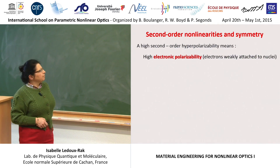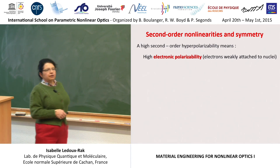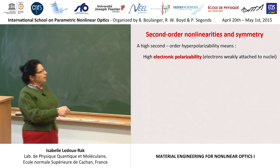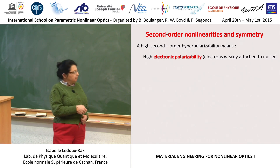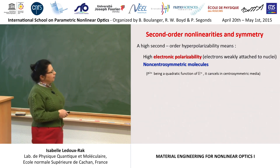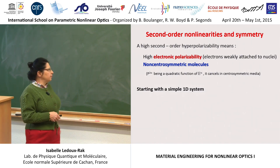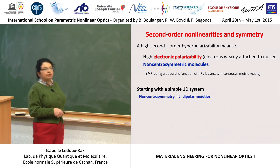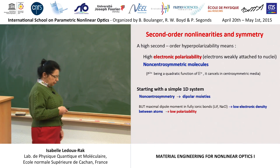The next point is related to symmetry. A high second-order hyperpolarizability will require, first, a large number of electrons, and those electrons must be sensitive to the action of an electric field — they should display a high electronic polarizability, meaning they are not too tightly attached to nuclei. It also requires non-central symmetry because it is a quadratic effect. We will start with the most commonly used systems, which are one-dimensional and dipolar. Dipolar systems are non-centrosymmetric and can also be oriented under external electric fields.